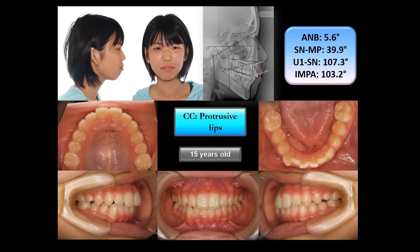Her chief complaint was protrusive lips, but she and her parents wanted to improve her profile without extraction or orthognathic surgery. She was 15 years old. She had a Skeletal Class II with hypodivergent growth pattern and proclined upper and lower incisors.